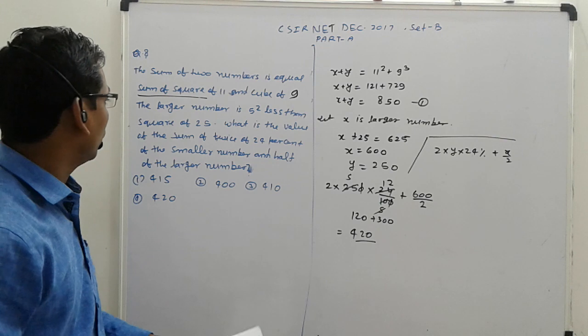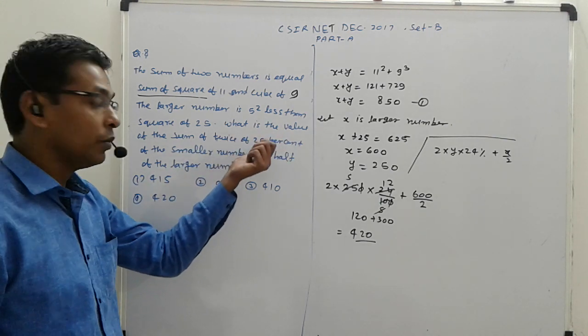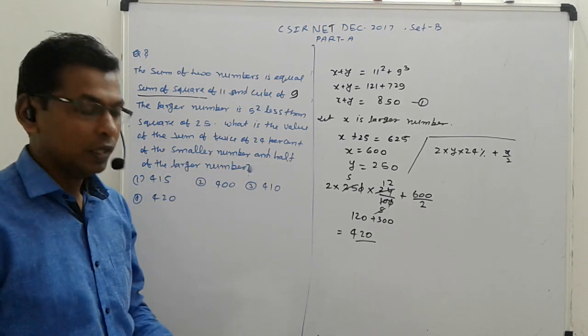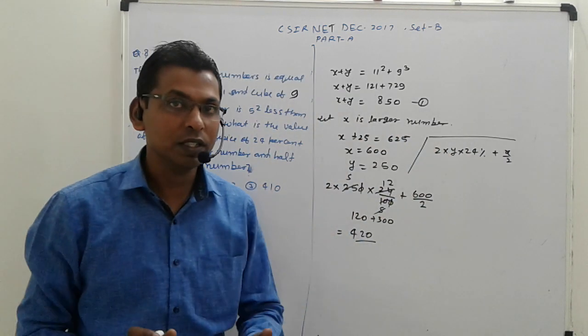What is the value of twice 24 percent of the smaller number plus half of the larger number? We have two numbers with some relations, so we will make two equations and solve them.